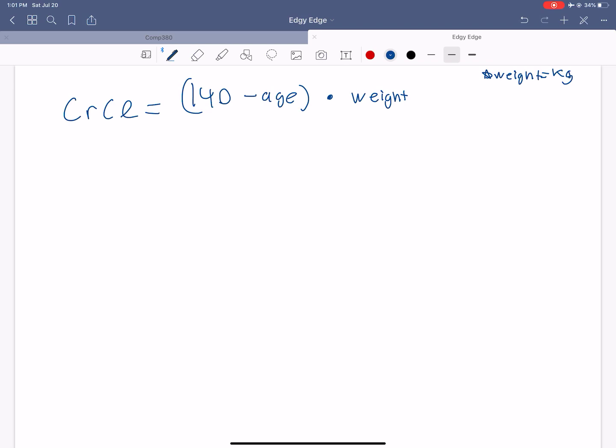As a side note, in medicine or in science, you use the metric system. So for weight, usually in kilograms. So over 72 times serum creatinine, and serum creatinine is a given number.